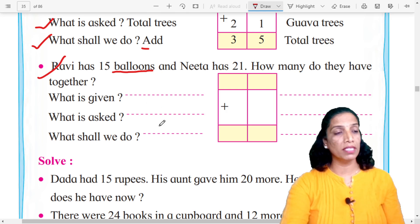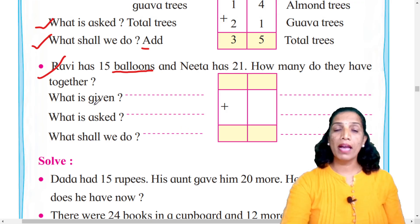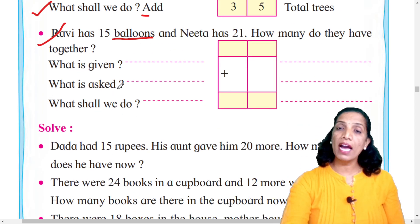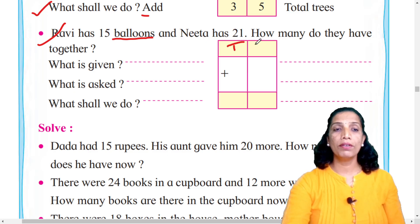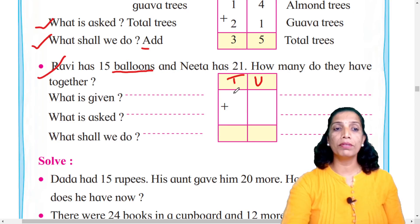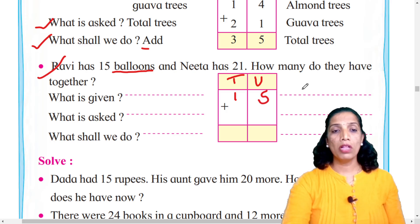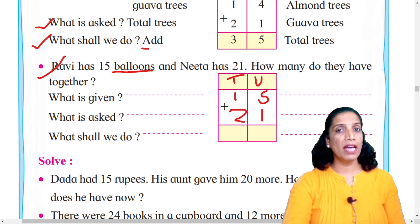Write the answer: total balloons. Third question: What shall we do? We do addition. The information given is the number of balloons, what is asked is how many together, and what we do is addition. Now we draw a table with tens and units. Ravi has 15 — write 15 here. Plus sign — very important. Neeta has 21 — write 21 here.